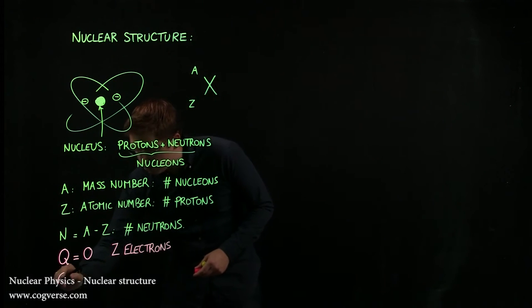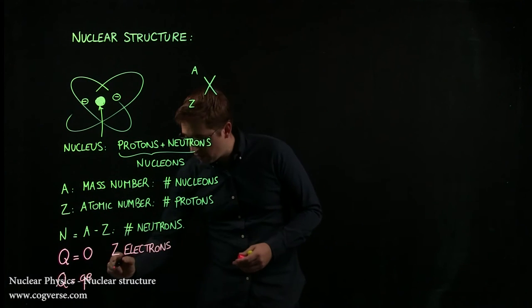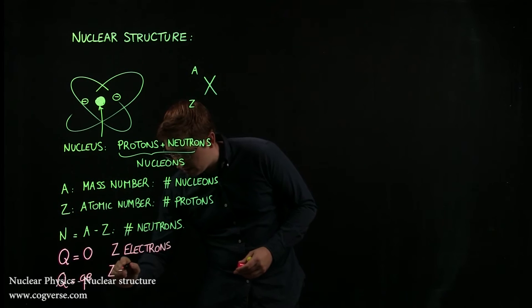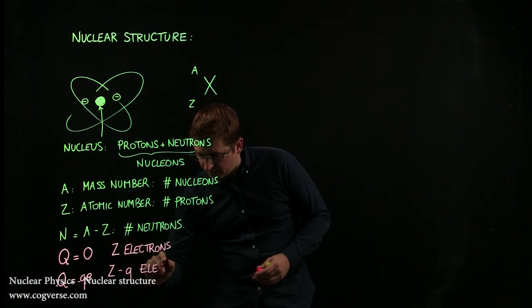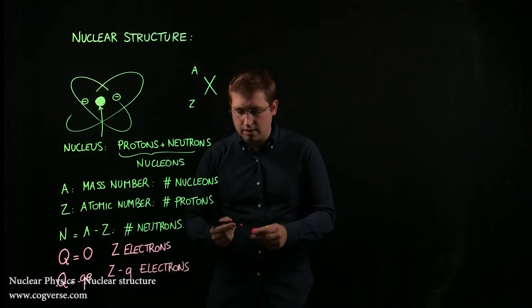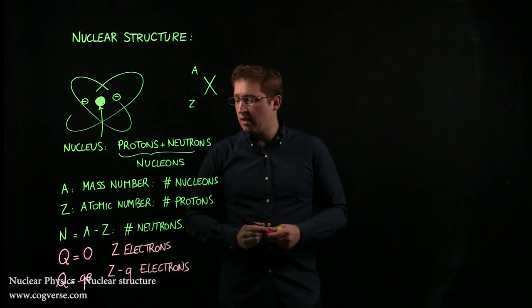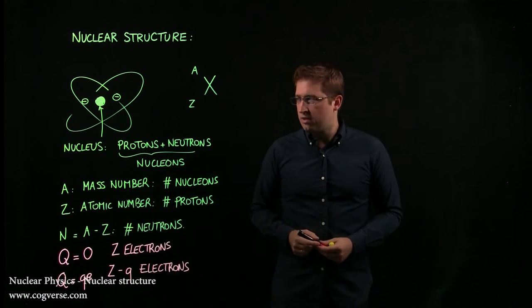Of course, if it has a charge equal to little q times E, with little q positive or negative, then there would be Z minus Q electrons. In other words, if you know A and Z and you know the charge of your element, then you can figure out the number of neutrons and the number of electrons.